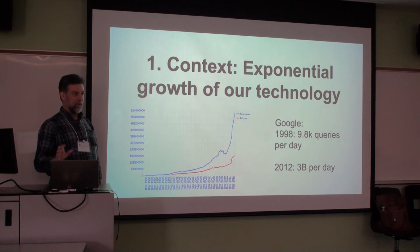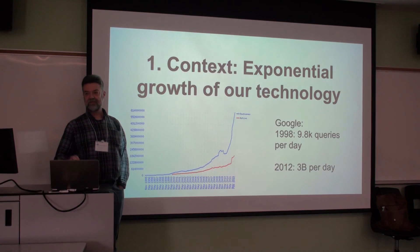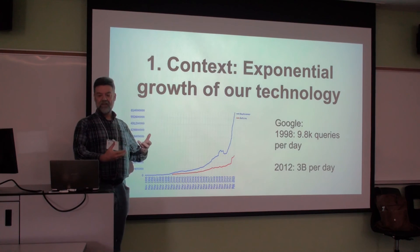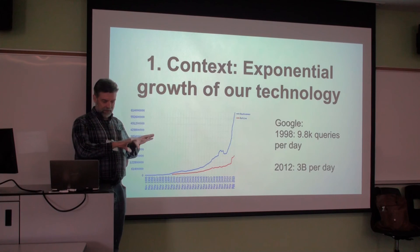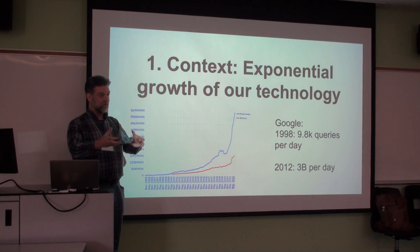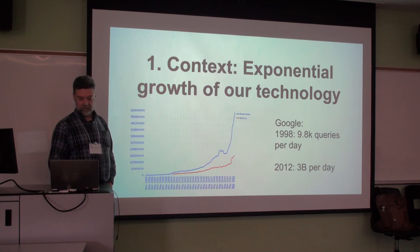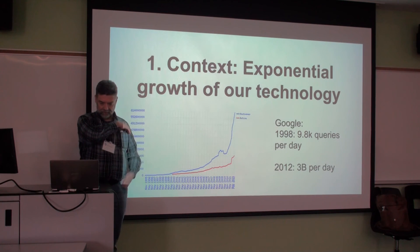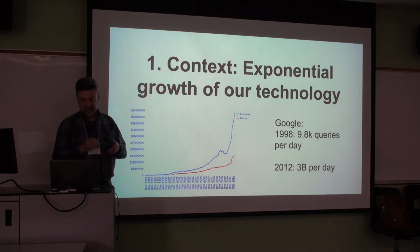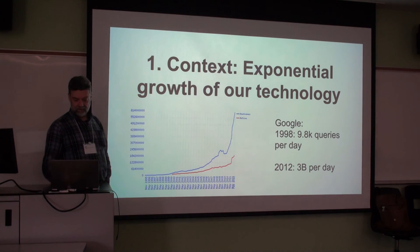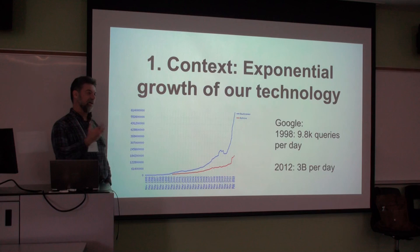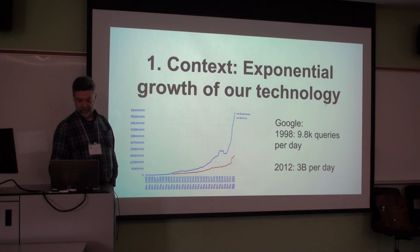In preparing this presentation I took a little stroll down memory lane. I've been involved with software for a long time, and looking at the trajectory we're on gives an idea of the impetus for looking for better ways to produce software. Just a couple of metrics: there are something like 600-some thousand websites, of which around 184 million are active. Google, when it started in 1998, had 9,800 queries in a day and now it's 3 billion per day. This is just indicative of where we're at, and there's been a parallel development in the technology we're using.